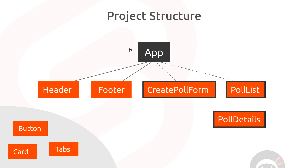Right now we're defining all of our polls data array inside the root app component, then we pass down the polls as a prop into the poll list component, and that passes down a single poll as a prop into poll details. If we want to add a poll, we do that from create poll form, emit a custom event, pass that data back up, edit the polls data directly inside app, then pass down the updated data as a prop into poll list and poll details.